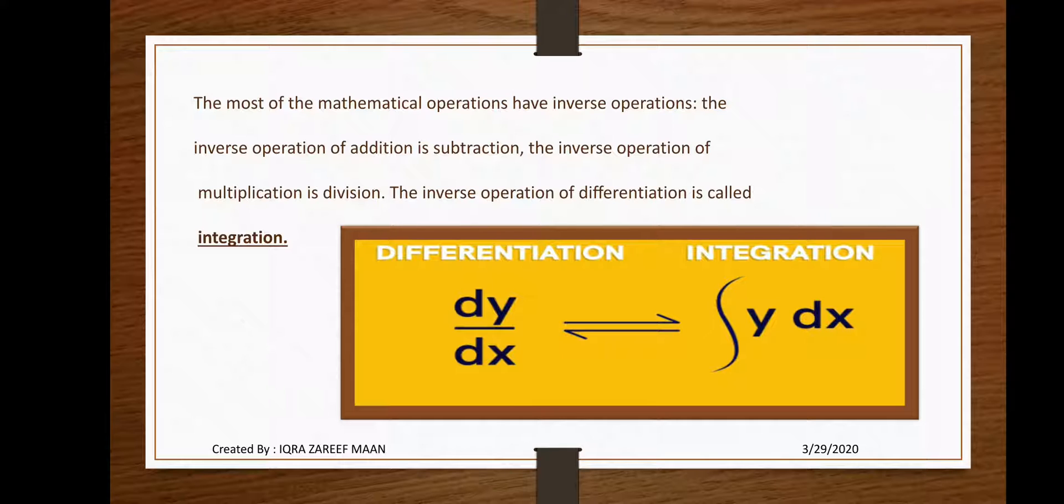We already discussed differentiation. What is differentiation? Basically, differentiation is the rate of change of a dependent variable with respect to an independent variable, where y is the dependent variable and x is the independent variable.